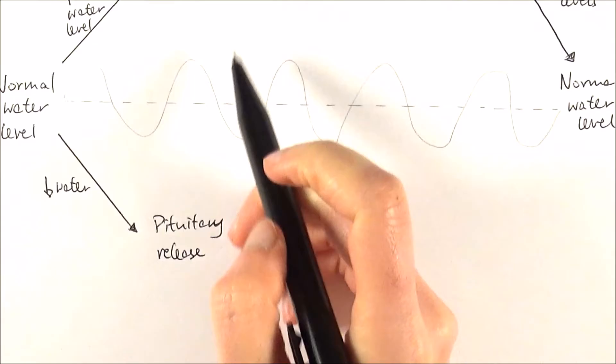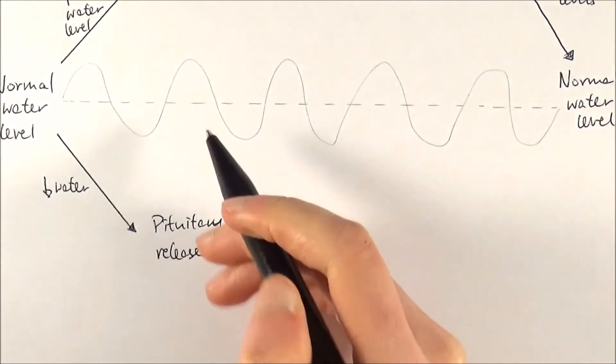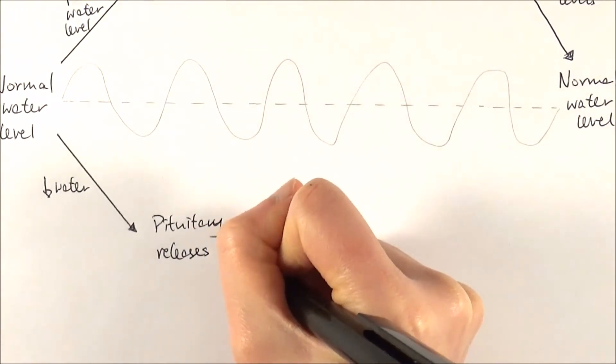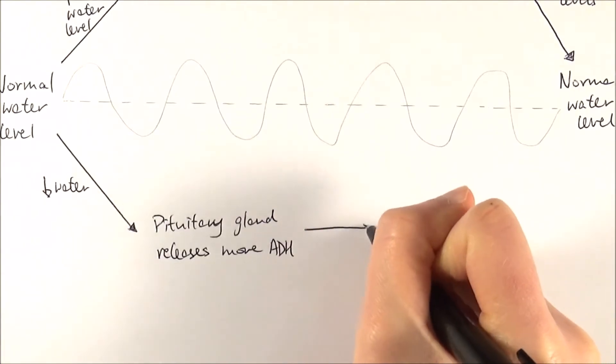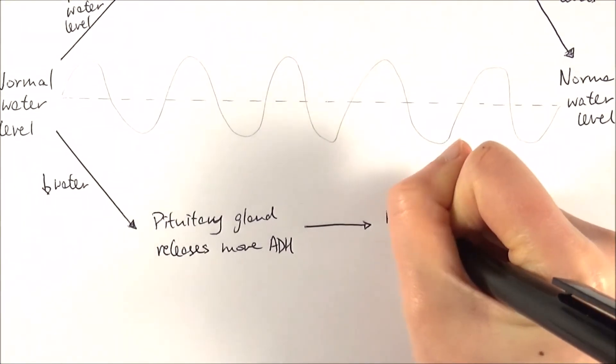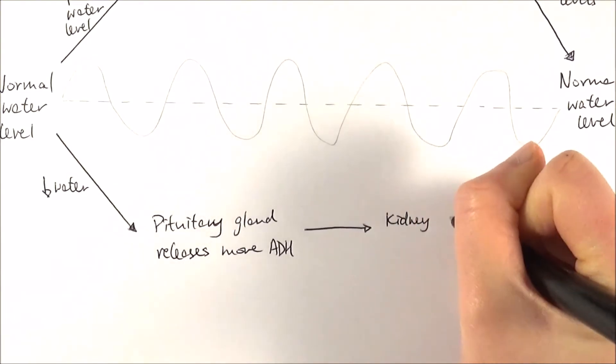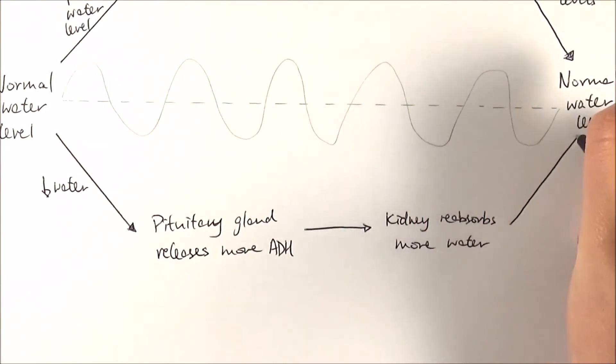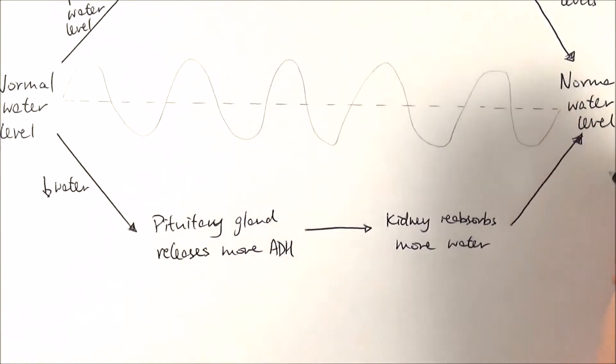In the same sense, it just does the exact opposite of the things above. The pituitary gland will release more ADH. The ADH travels via the blood to the kidneys to tell the kidney to reabsorb more water. There's more ADH, and in that sense we will restore the blood water levels because we get more water back.